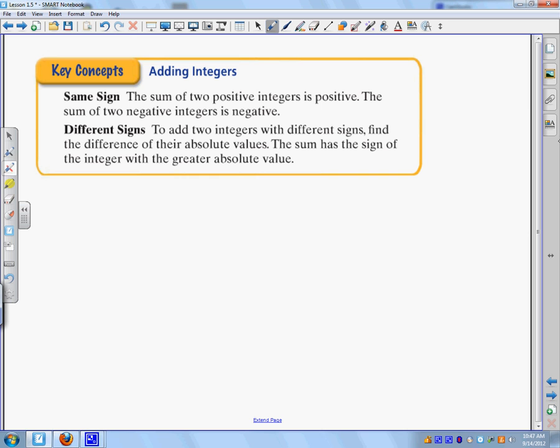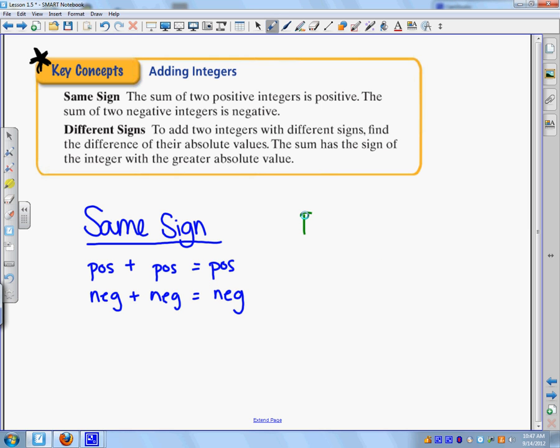All right. The last way to do this is by using some rules. So write down this key concept. Push pause if you need to. Okay. What it is, is the same sign. So if I have two numbers that have the same sign, what you do is a positive plus a positive equals a positive. If two numbers have different signs, then you, what you do is you subtract the numbers. You don't worry about their signs, you just subtract the numbers, and then you keep the sign, keep the sign of the larger number.